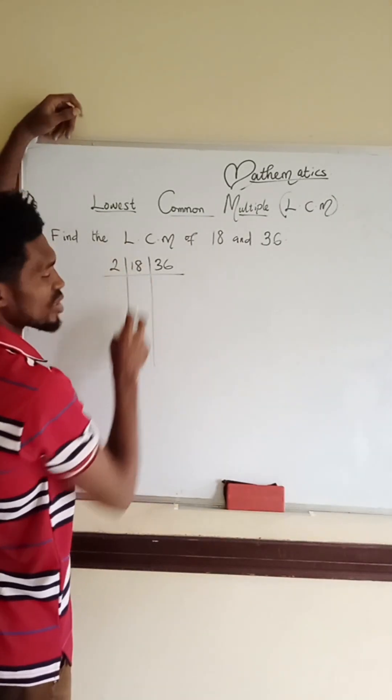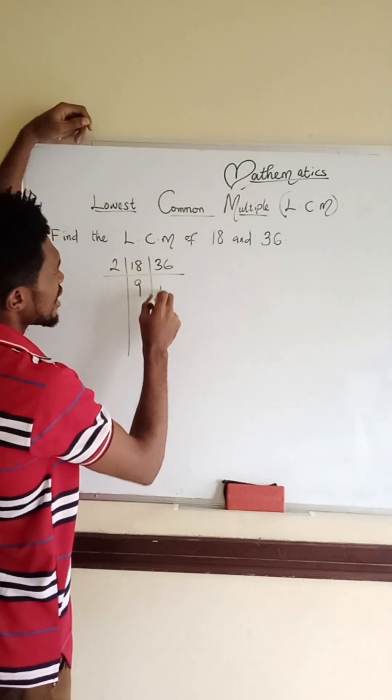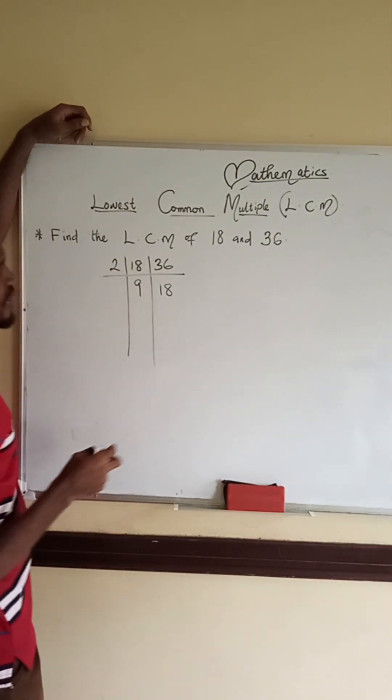So 2 divided by 18. Go to your times table. You will get 9 times. Here you will get 18 times.